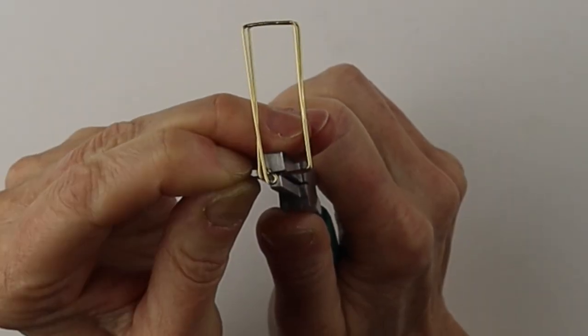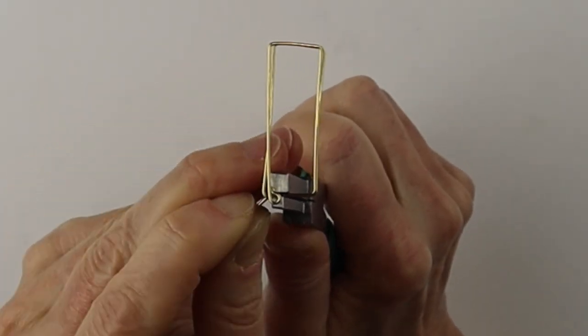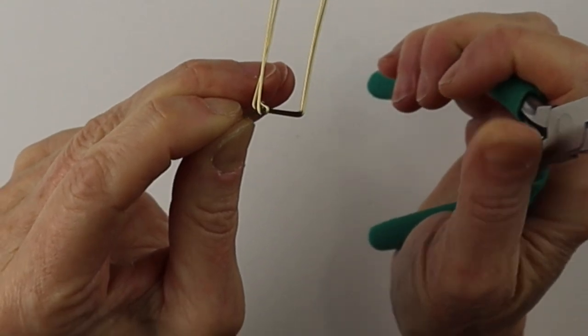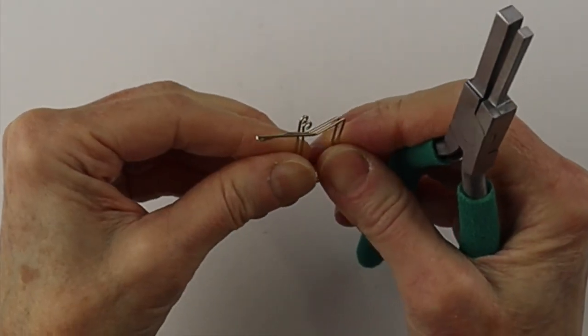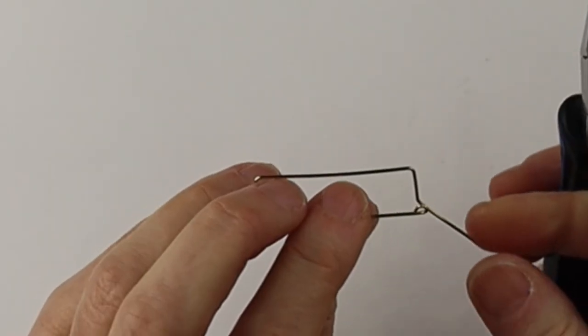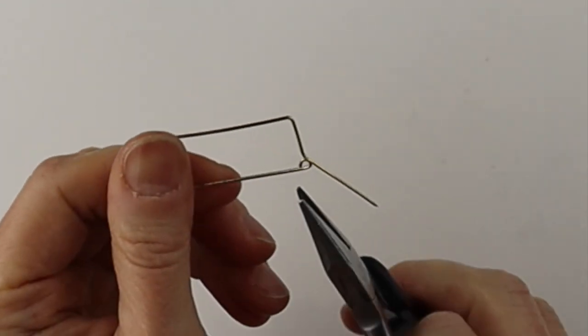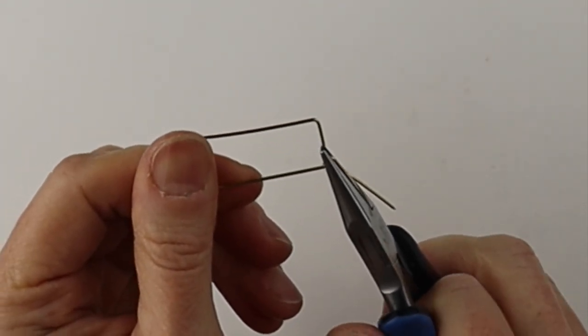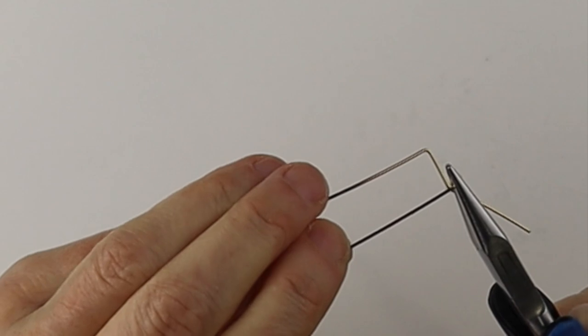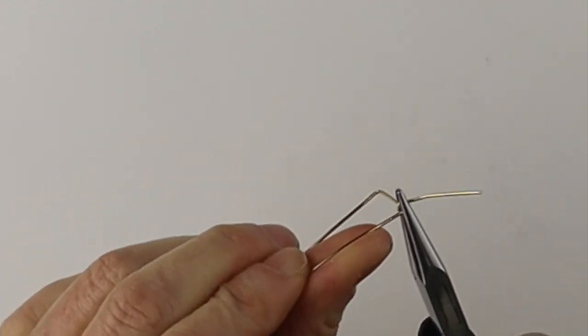Hold that where we're going to want the bend to be and just bend it up on a bit of an angle. Now we're going to separate them and you can take this here and just rotate it a half turn.